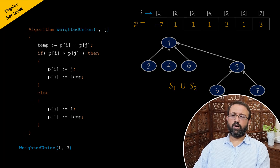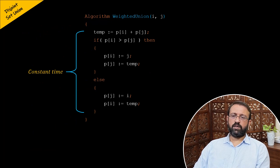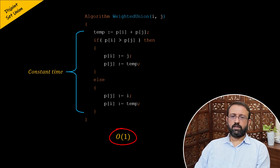Now let us look at the time complexity of the weighted union algorithm. All the statements are primitive statements, and the if structure executes if the condition is true, otherwise the else structure executes. Since all the statements are primitive and take constant time, the overall time complexity of the weighted union algorithm is O(1). This is all about the weighted union algorithm and the union operation performed using the weighting rule.